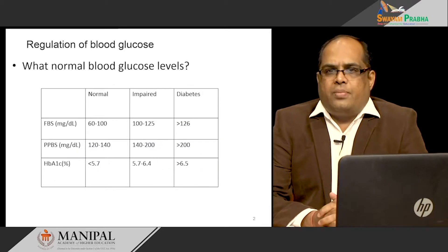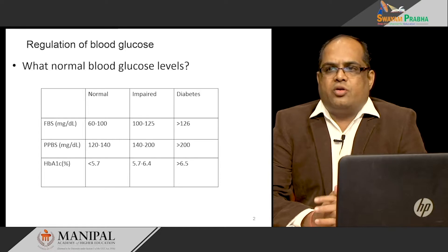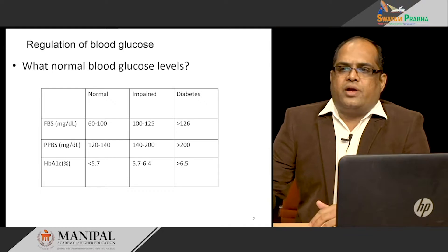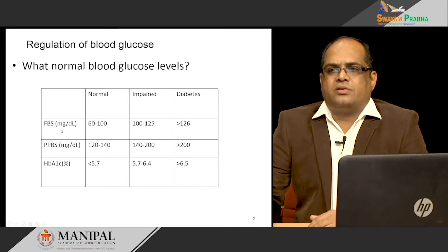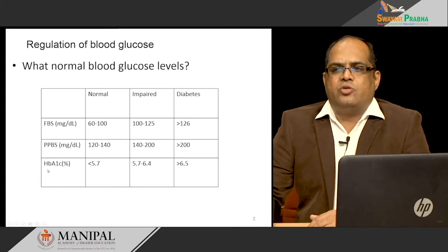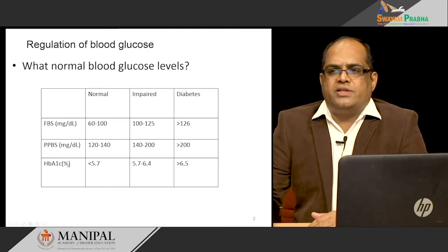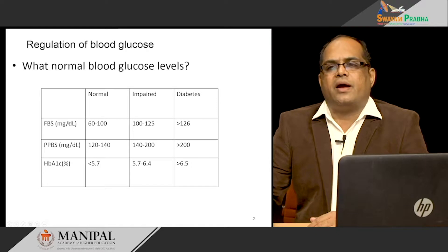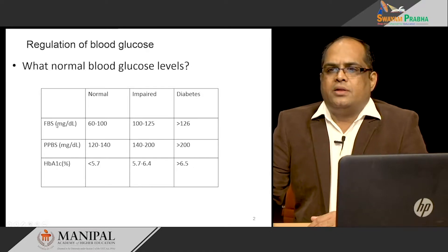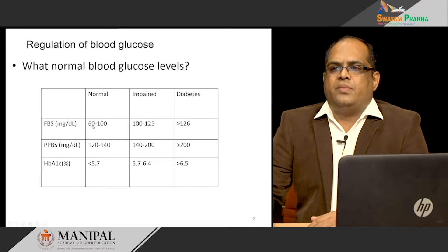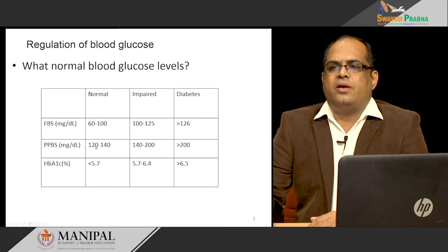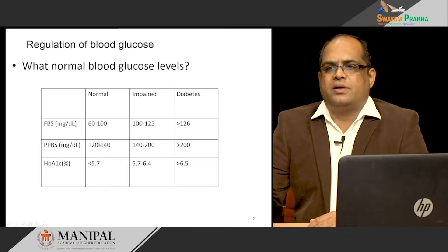Before discussing that, we have to know the normal blood glucose level. You can see here the fasting blood glucose level, postprandial blood glucose level, and glycated hemoglobin, that is HbA1c in percentage. The fasting and postprandial blood glucose levels are in milligram per deciliter. Normally, the FBS should be between 60 to 100 milligram per deciliter and postprandial blood glucose should be 120 to 140 milligram per deciliter.